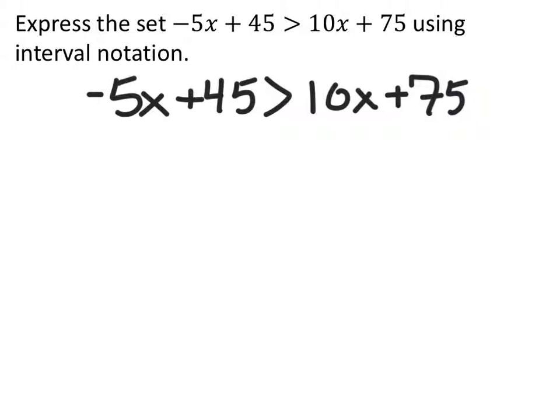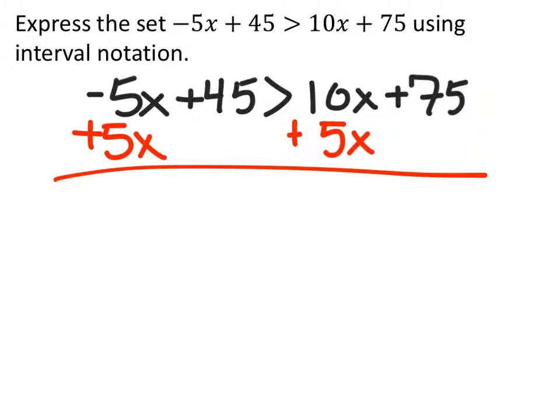So we got this negative 5x plus 45 is greater than 10x plus 75. Now, most of you prefer having the coefficient be positive. What this means is that we would add 5x to both sides. And the reason for that is because if we subtract 10x from both sides, then we would have a negative 15x. But this one right here is going to give us a positive 15x.